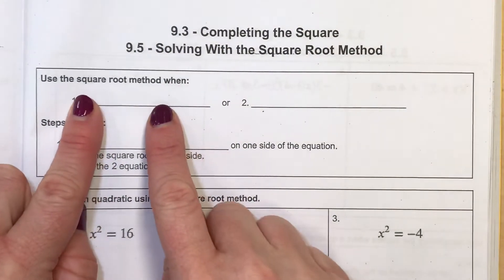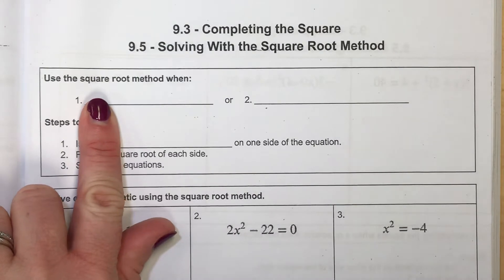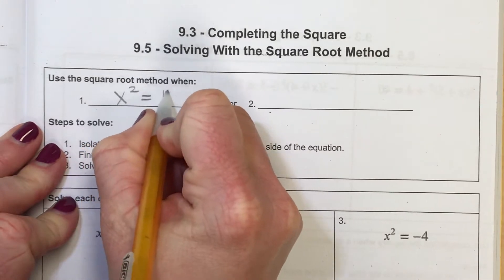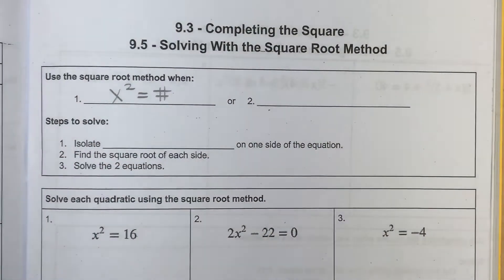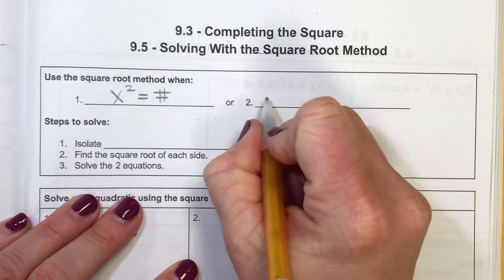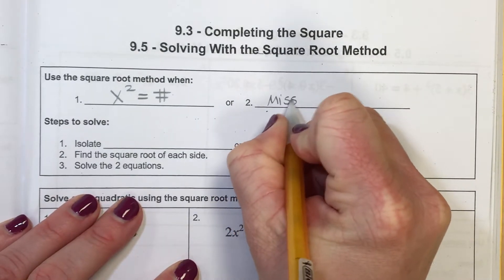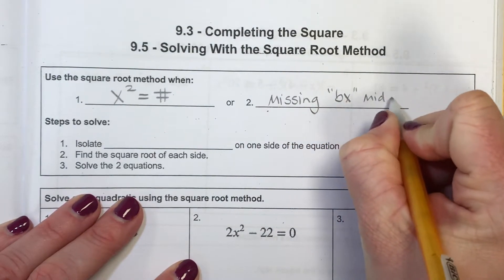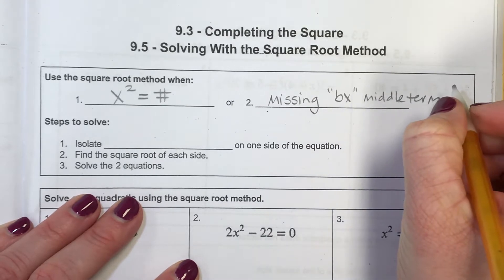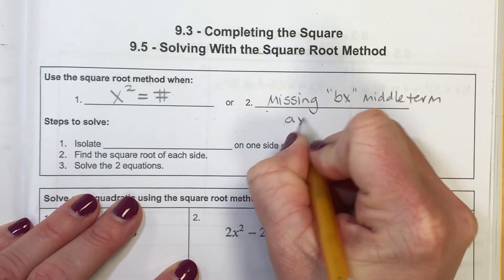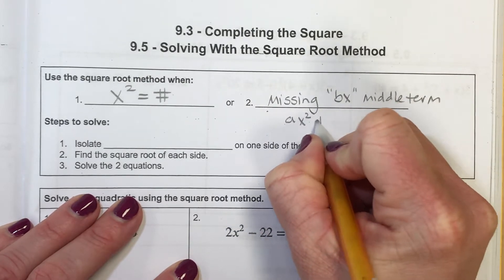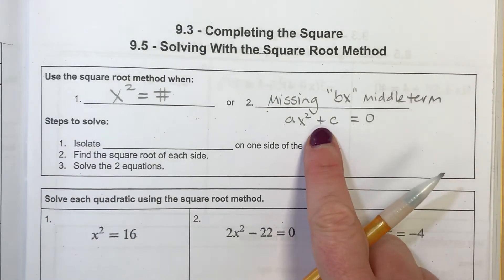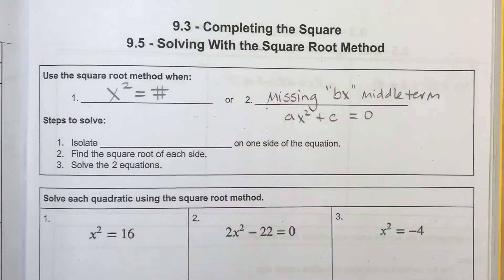When we're going to use the square root method, I want you to fill this out at the top of your sheet: it applies when you have an x squared set equal to a number, or if you have a quadratic and you're missing the linear term — it's called the bx middle term. So you're going to see an ax squared and a c term, but your middle linear term is not going to be in the problem.